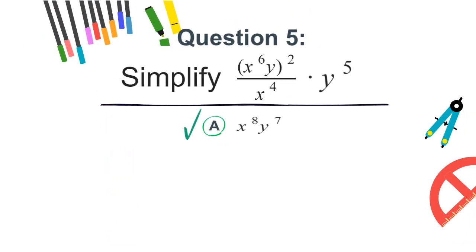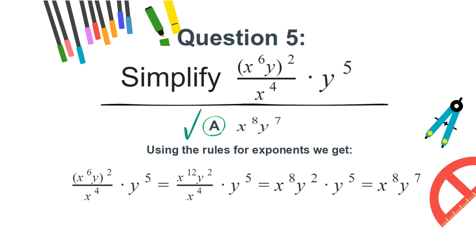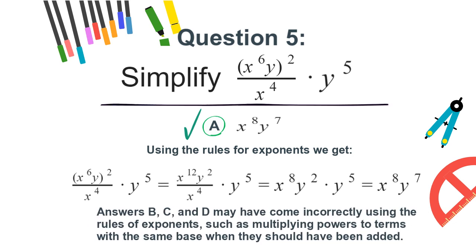The correct answer is a. x to the 8th power times y to the 7th power. Using the rules for exponents, we get the following. Answers b, c, and d may have come from incorrectly using the rules of exponents, such as multiplying powers of terms with the same base, when they should have been added.